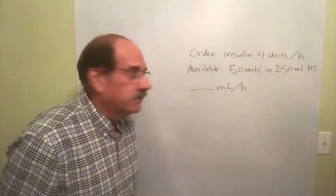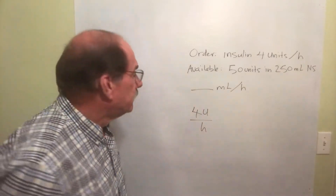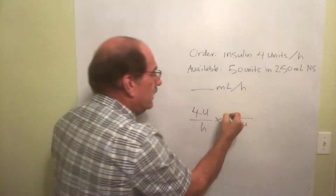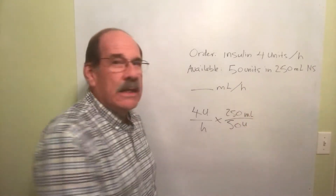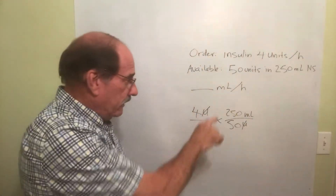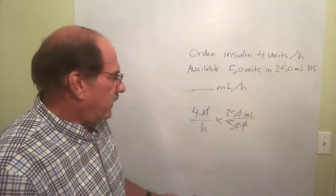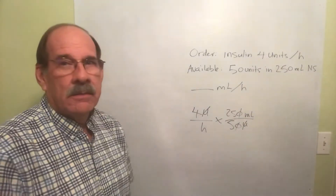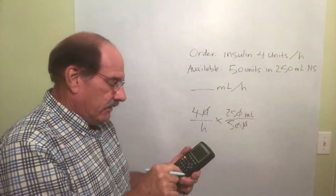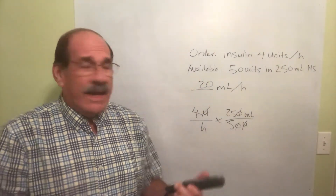So let's go real fast. What's our order? Four units per hour. How strong is the stuff we have available? We have 50 units dissolved in 250 milliliters of our IV fluid — in this case, normal saline. Units cancel out, and it's four times 250 divided by 50. Cancel the zeros: four times 25 divided by 5, and the answer is 20. I'm going to give 20 milliliters per hour.